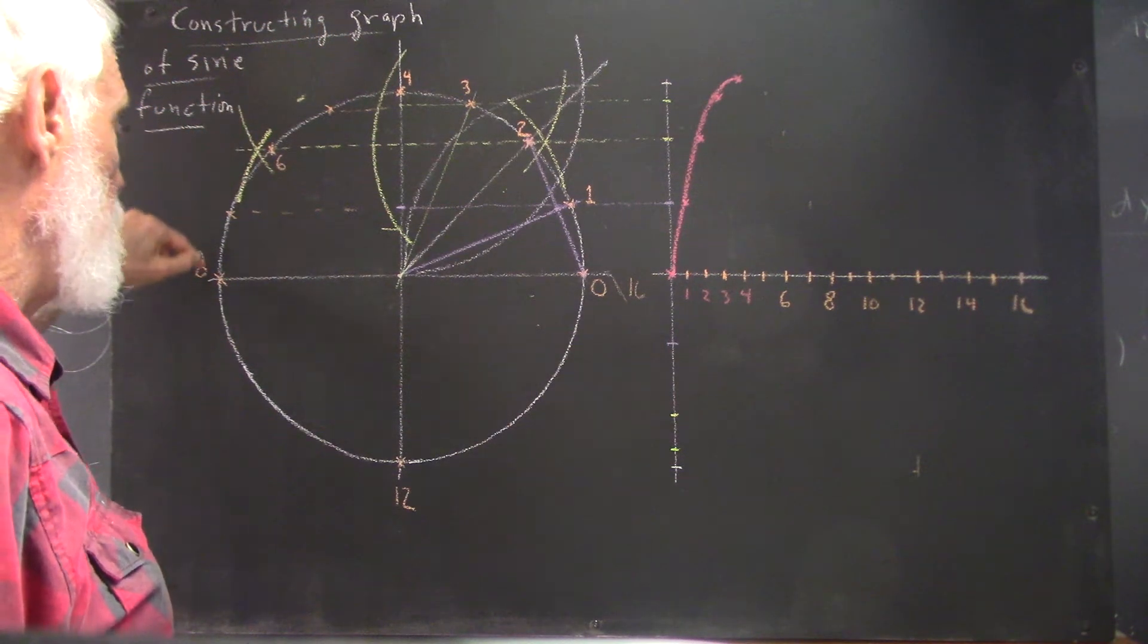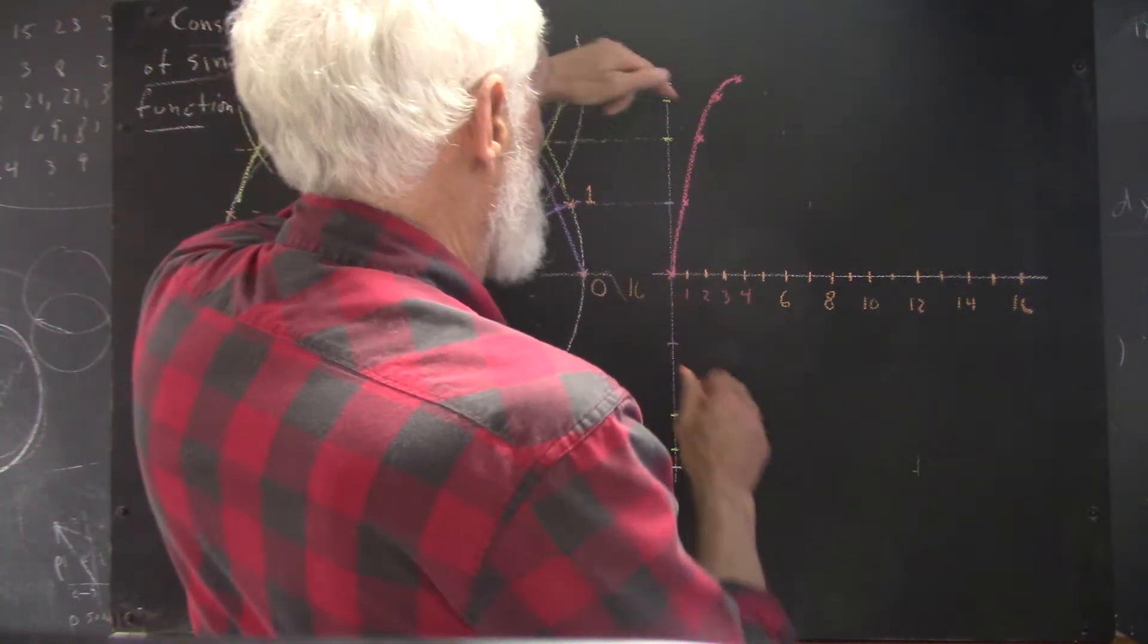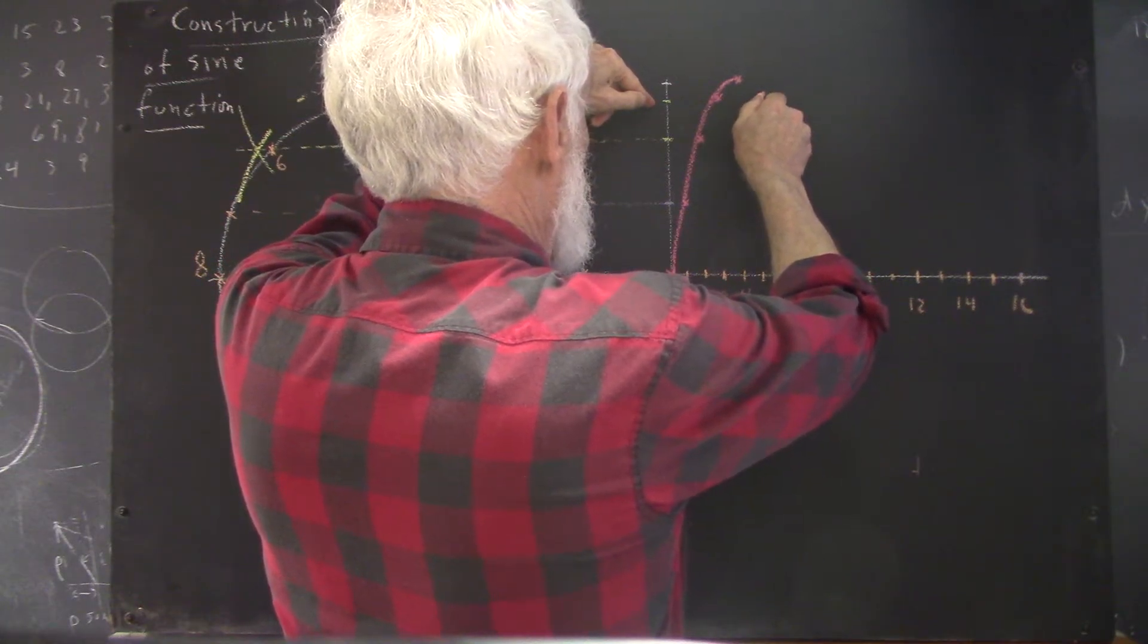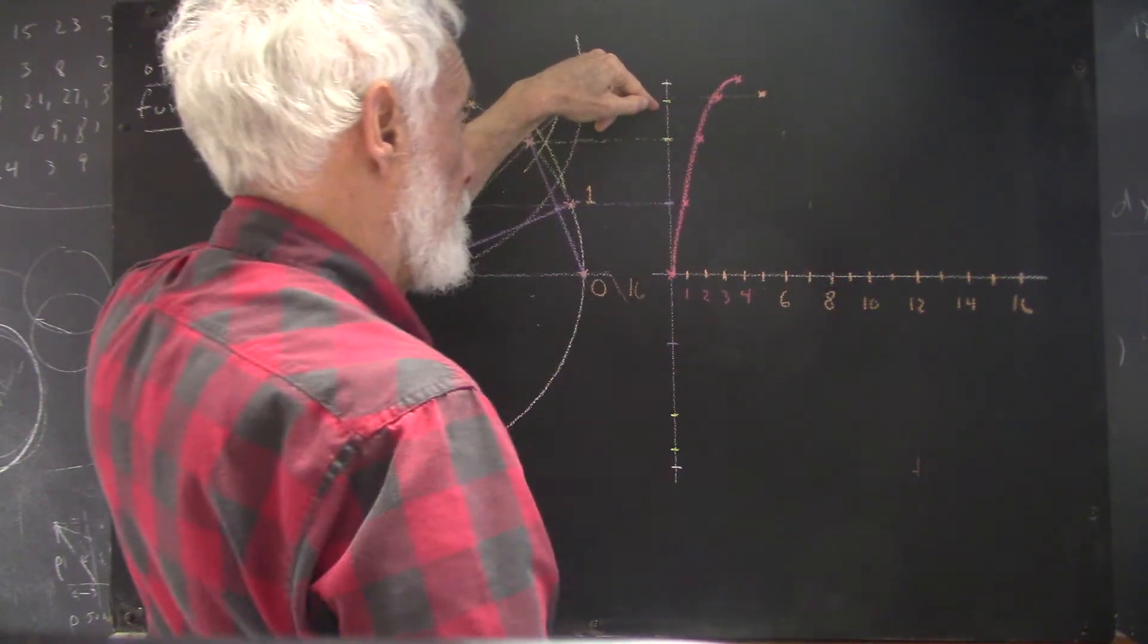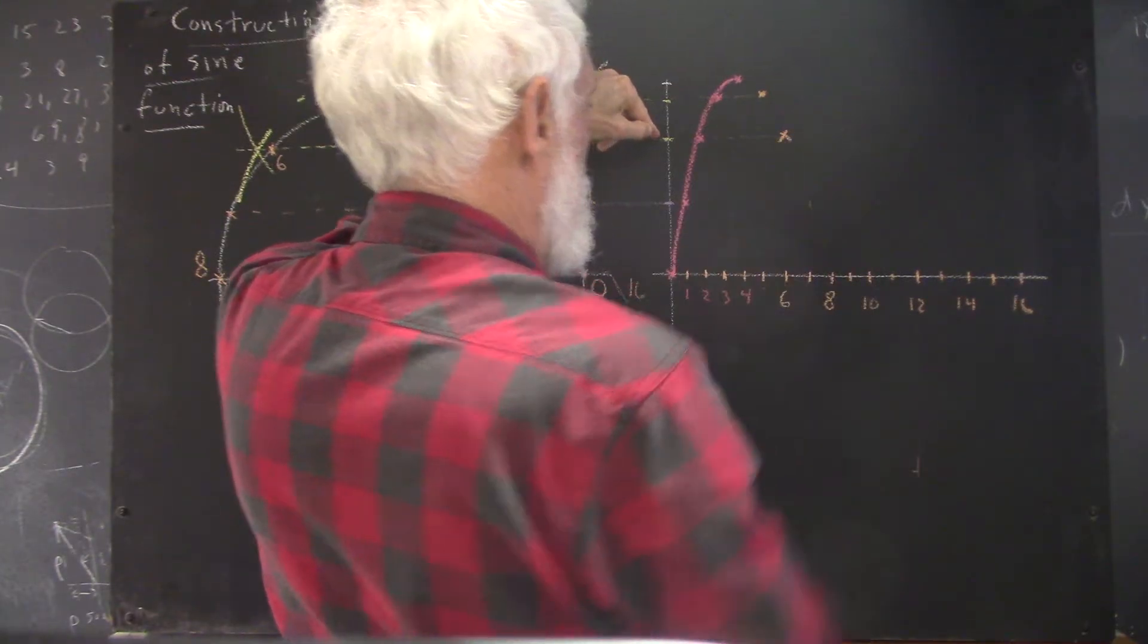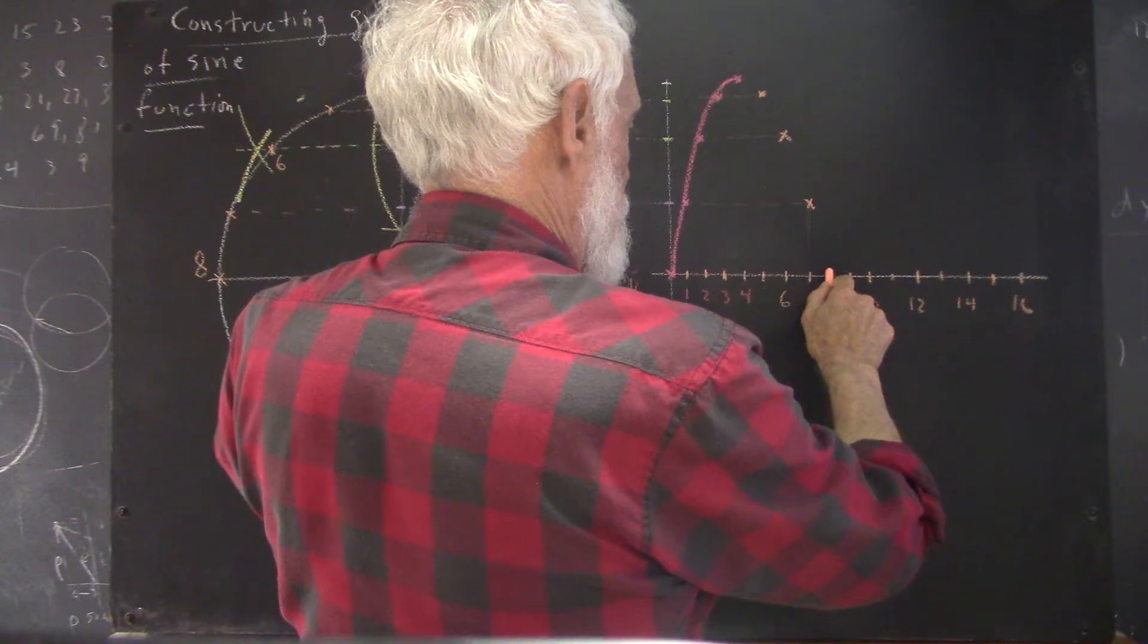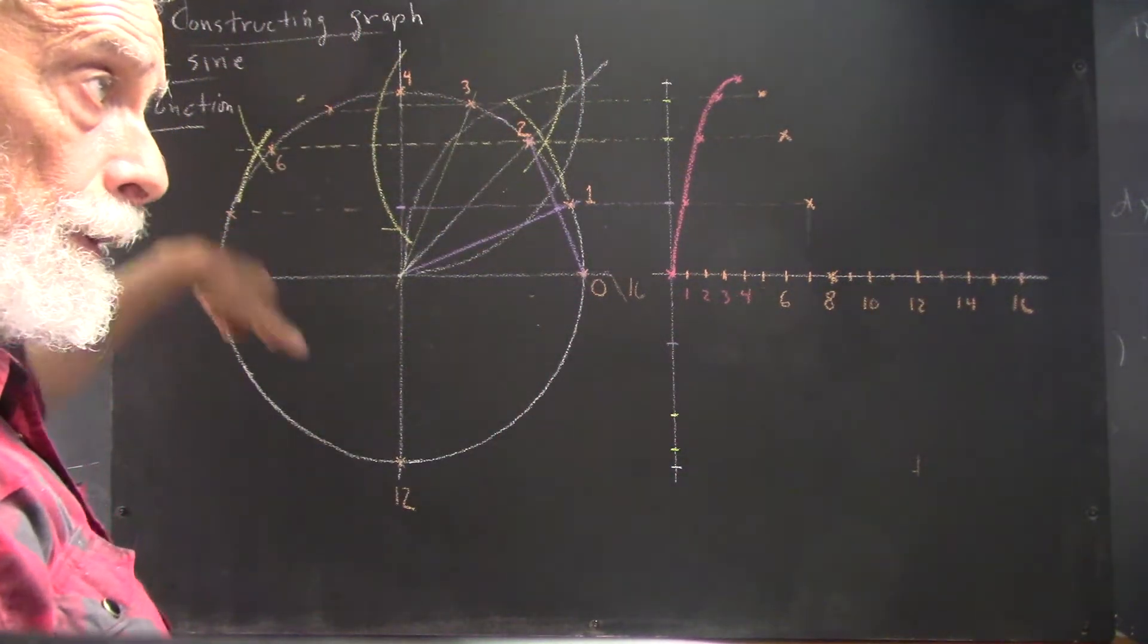So between here and here, our y-coordinates will decrease through the same values they took as they increased from here to here. That's going to give us a point. For number 5, between 4 and 6, we have 5. We come up to the graph and we're going to be at the same level we were here. We could draw a little light line and get a point here. Come over to here and down to here we get another point. And then here we get a point.